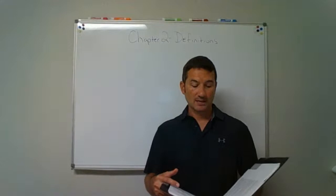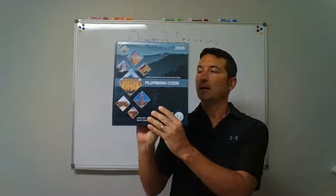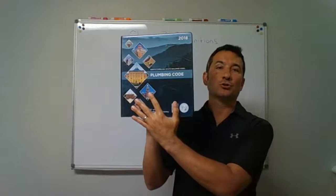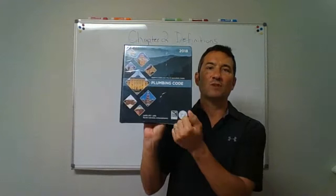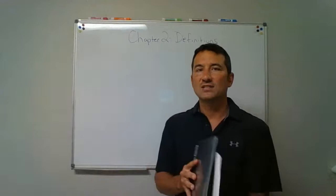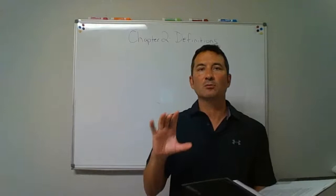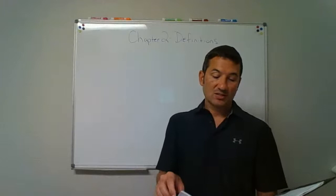Welcome to the North Carolina Plumbing Code class. Hopefully by now you've been able to get the 2018 edition of the North Carolina Plumbing Code. This is for commercial plumbing. It used to be that this book was needed for both residential and commercial plumbing, but they've actually taken the residential plumbing code and it now falls under the residential building code.